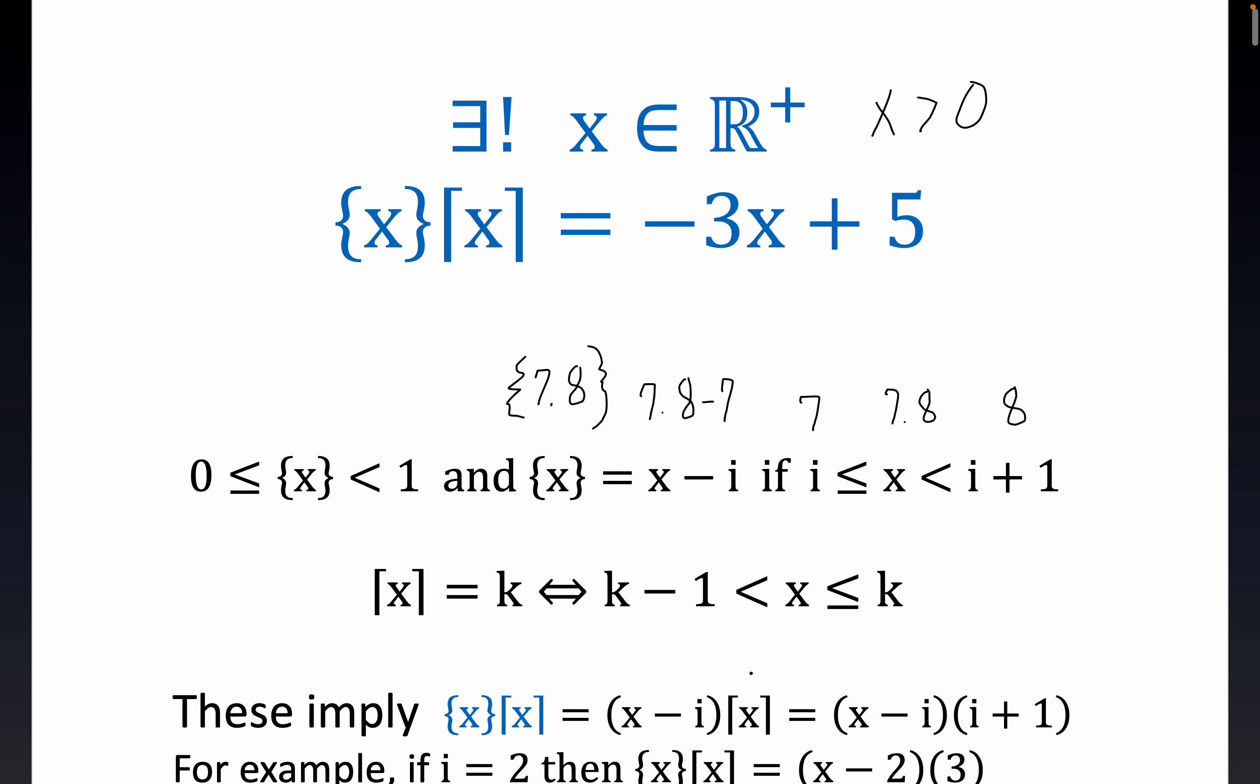So our object here, I'll just call this the object rather than say fractional part of x and ceiling of x, we can linearize our object in this fashion based on these two definitions. Notice i and k are integers here.